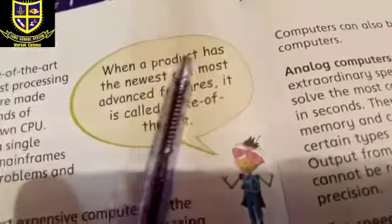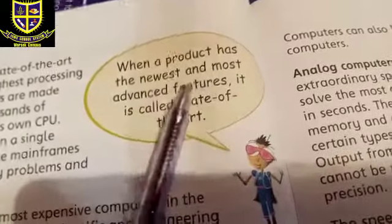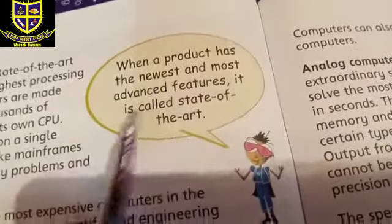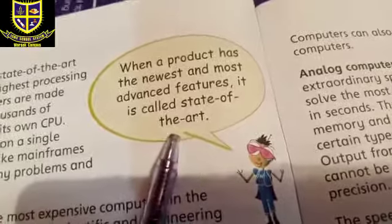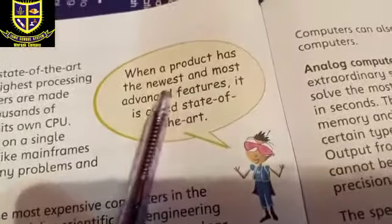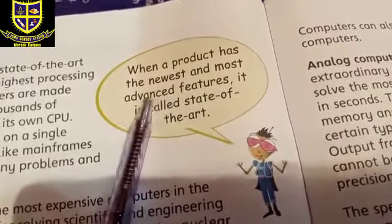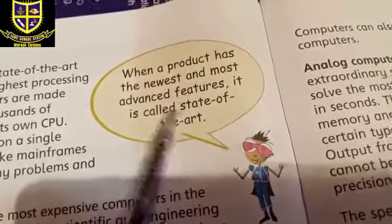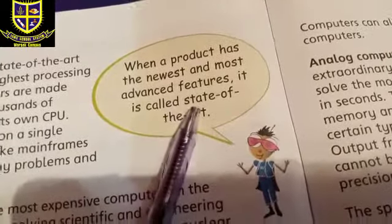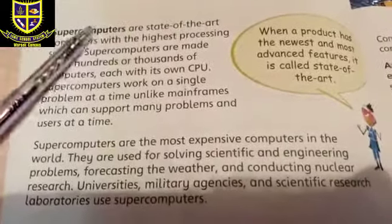When a product has the newest and most advanced features, it is called state of the art. Jab hamare paas koi product hoti hai jo new hoti hai aur uske features bahut zyada advanced hote hain, usse hum state of the art kehte hain — jaise ke hamare paas supercomputers hain. Supercomputers are the most expensive computers in the world.